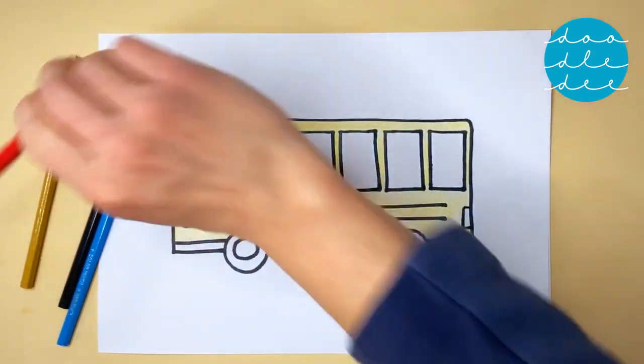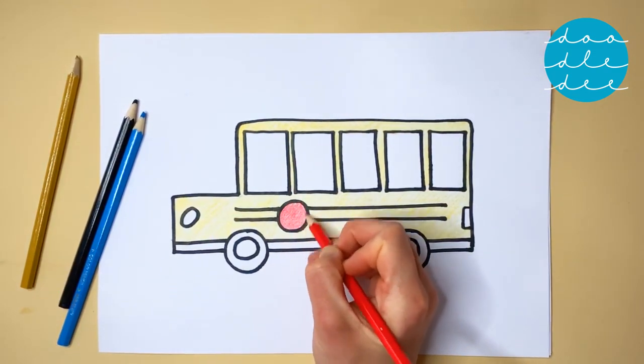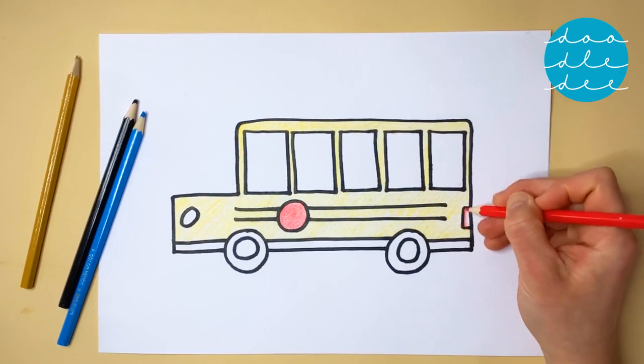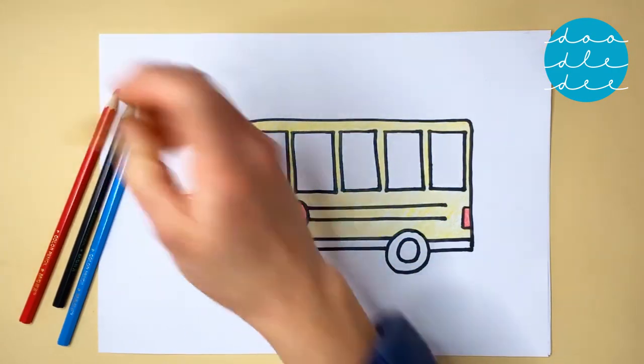Next is red! Red for the circles, and red for the rear light. Then another yellow for the front light.